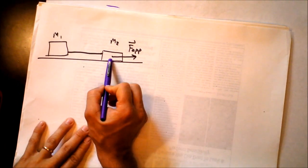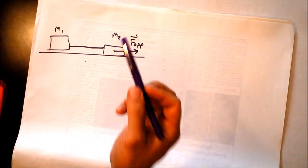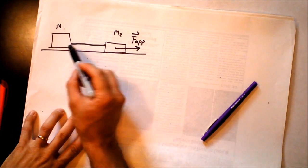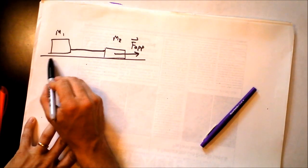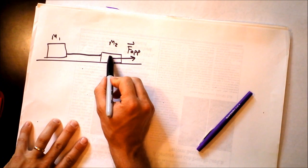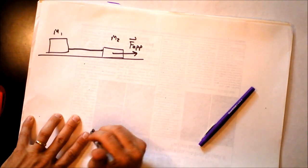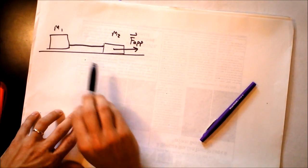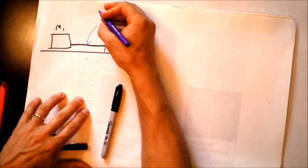Here's a fun, tricky problem. There are two boxes full of Pokemon cards, and they're attached with a rope between them on a frictionless surface. You apply a force to box two and pull it, and I want to know what the tension in the rope is.